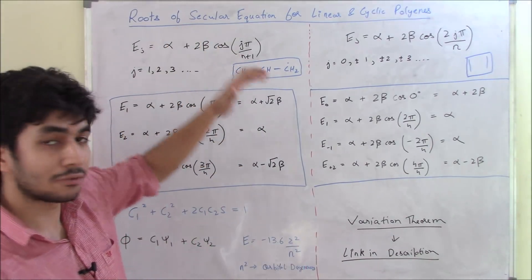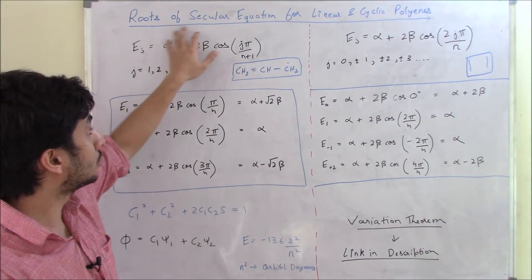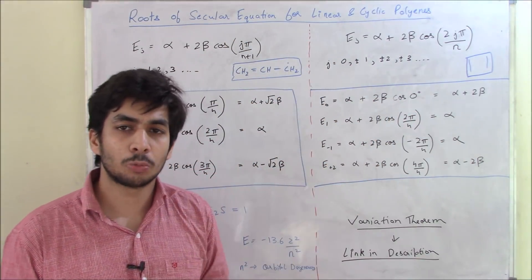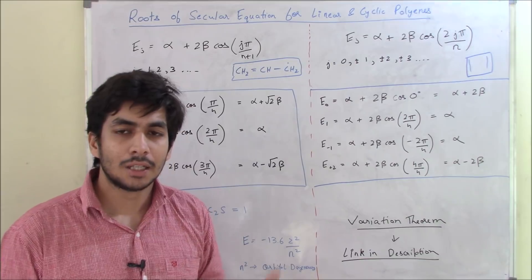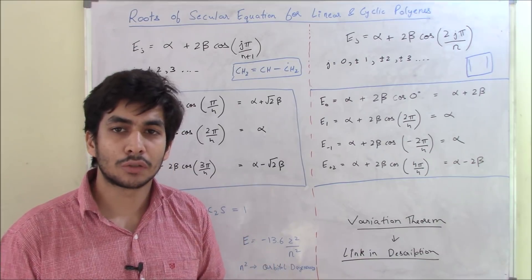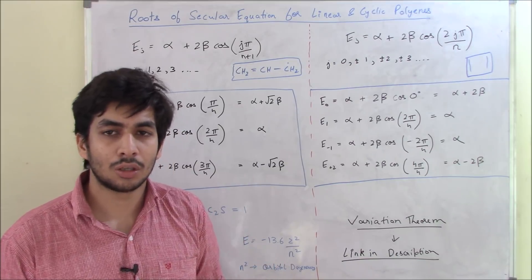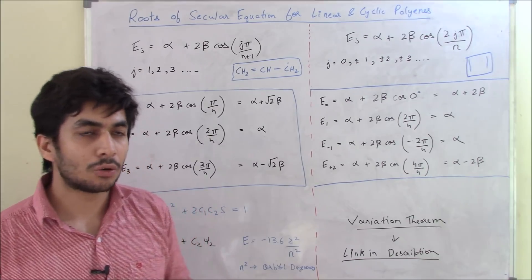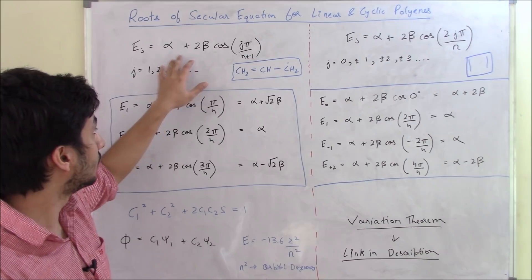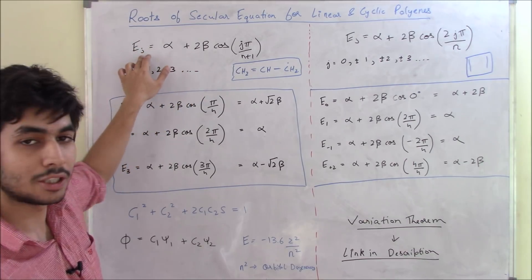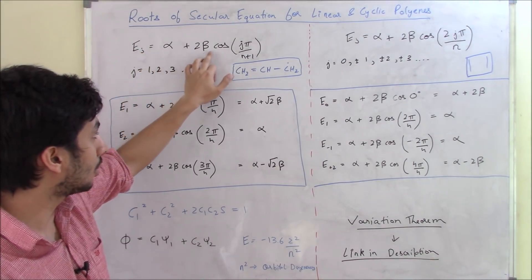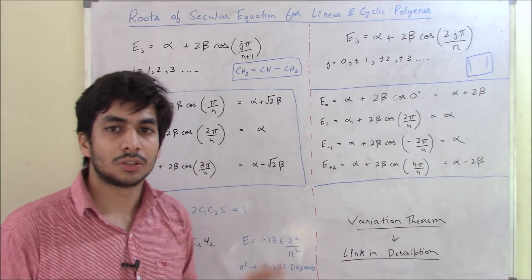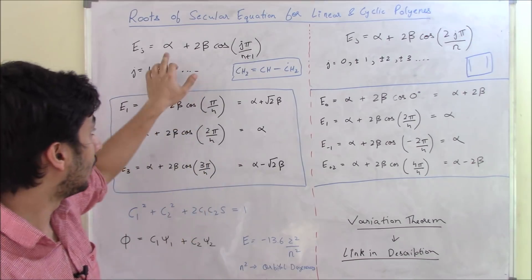There's a particular question for which I have a trick: roots of the secular equation for linear and cyclic polyenes. This question has been asked numerous times in both NET and GATE exams — you have to find the roots of the secular equation for either a linear polyene or a cyclic polyene. For linear polyenes, energy is equal to alpha plus 2 beta cos(j·π / (n+1)).